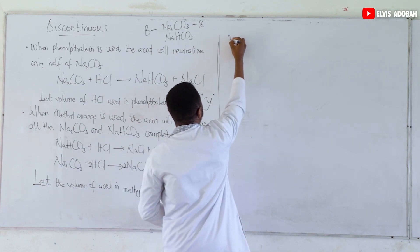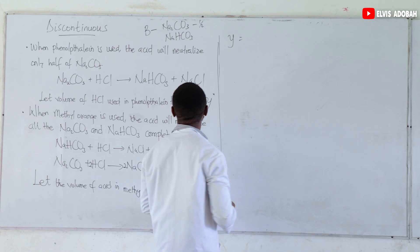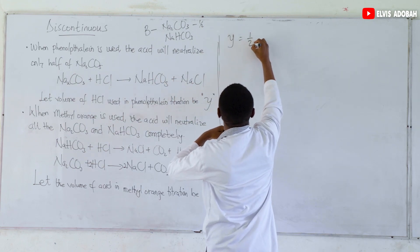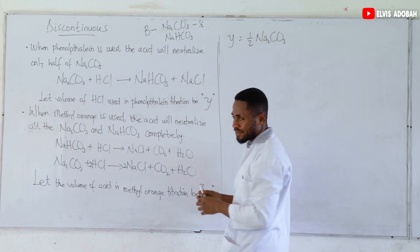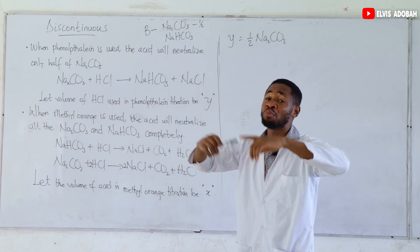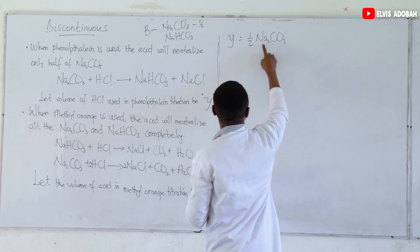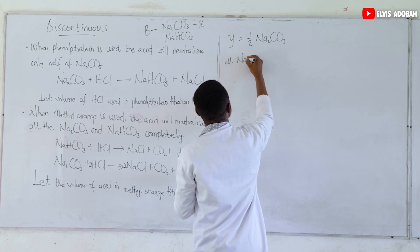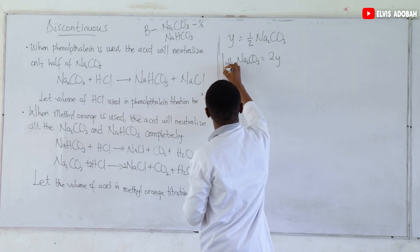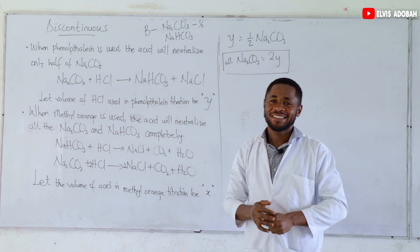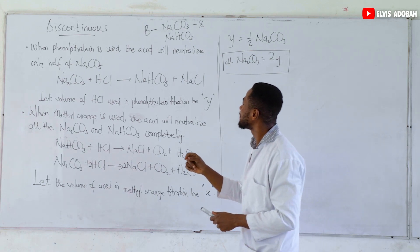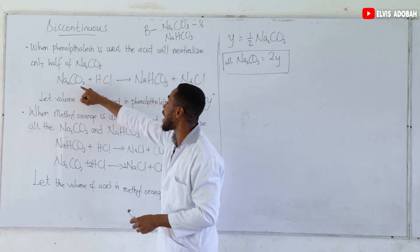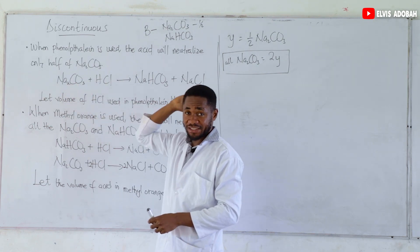So Y is the volume of acid used in the phenolphthalein titration, and what did Y do? It just neutralized half of the sodium carbonate — and even that neutralization wasn't complete. So if we want to neutralize all the sodium carbonate, we make it the subject: all sodium carbonate will require 2 times Y. HCl needed half of it, so to convert all of it you need twice as much acid.